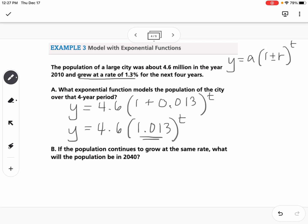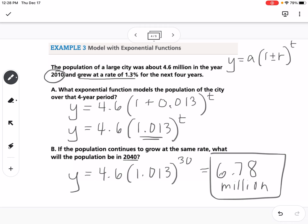So then the second part says if a population continues to grow at the same rate, what will the population be in 2040? So we're going to use that equation 4.6 times 1.013. So this was for the year 2010, so that's our zero year. So 2040 is 30 years past 2010, so we're going to type that into our calculator, so 4.6 times 1.013 raised to the 30th, and we get 6.78, but remember that was millions. So 6.78 million would be the population in 2040.